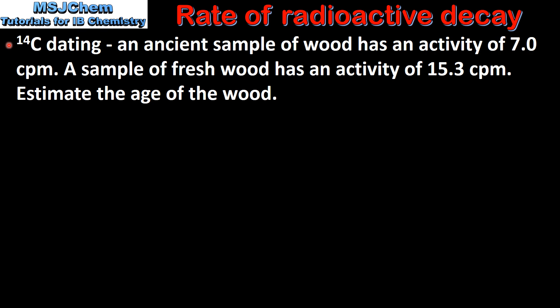Our final example involves carbon dating. An ancient sample of wood has an activity of 7.0 counts per minute. A sample of fresh wood has an activity of 15.3 counts per minute. Estimate the age of the wood.